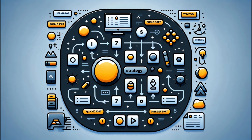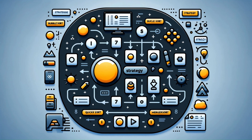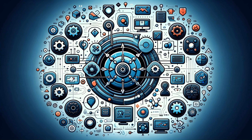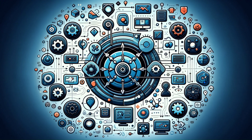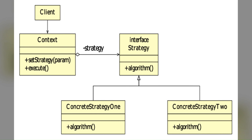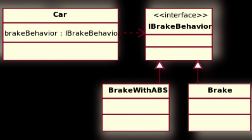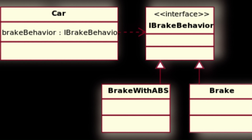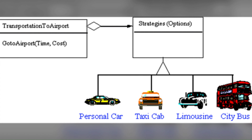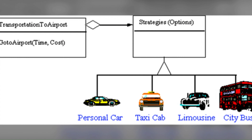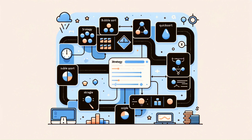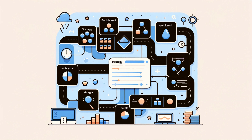The Strategy pattern is a very important pattern. It defines a family of algorithms, encapsulates each one, and makes them interchangeable. Strategy lets the algorithm vary independently from the clients that use it. Think of it like travel planning — depending on time, budget, or preference, you might choose different modes of transportation: at one point a car, at another a train or airplane. Each mode is a different strategy for traveling.